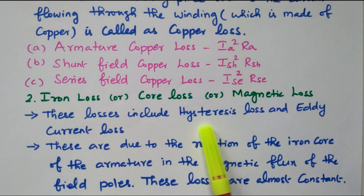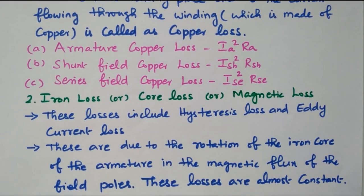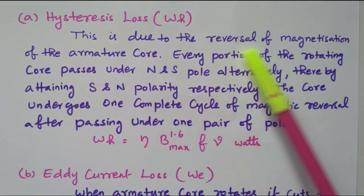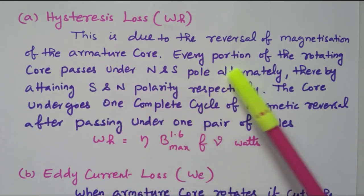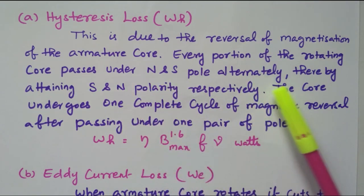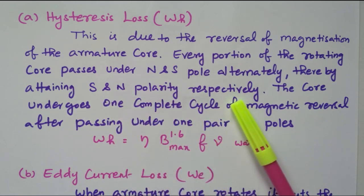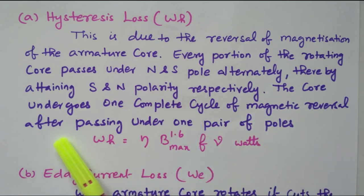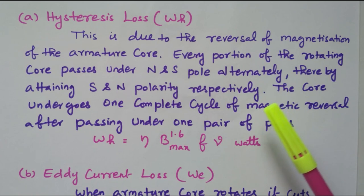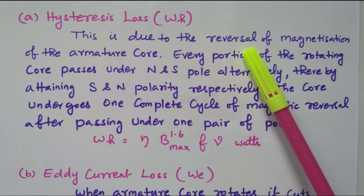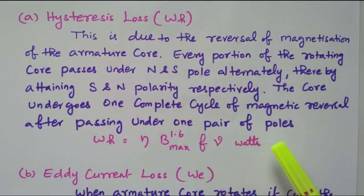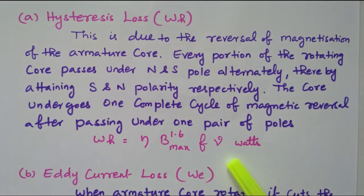Now we will see what is eddy current loss and what is hysteresis loss. Hysteresis loss is due to reversal of magnetization of the armature core. Every portion of the rotating core passes under N-pole and S-pole alternatively, thereby attaining N and S-polarity respectively. The core undergoes one complete cycle of magnetic reversal after passing under one pair of poles. So this loss is due to the reversal — N-pole and S-pole are produced alternatively in order to get attraction and repulsion. Due to this reversal of magnetization of the armature core, the loss that happens is called hysteresis loss. The formula is: B_max to the power 1.6, multiplied by F into V.